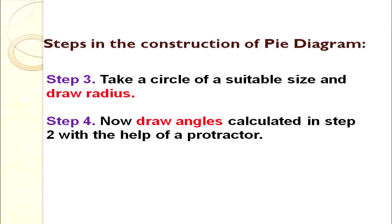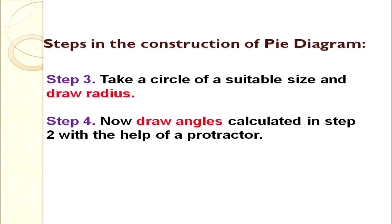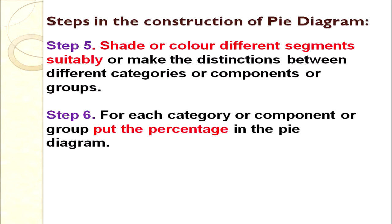The next step is to draw a circle — neither too big nor too small. Then draw the radius at an appropriate size. After this, in Step 4, draw the angles in a clockwise direction with the help of a protractor. In Step 5, shade or colour the different segments so that we can easily identify them.